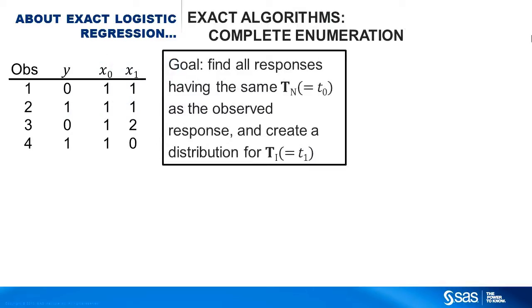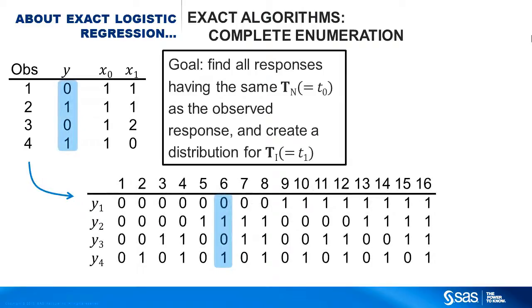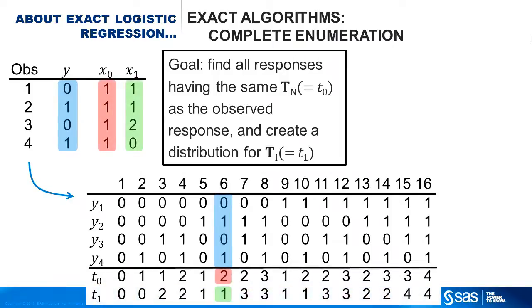Let's create an exact distribution for this data, which has an observed response vector y taking values 0, 1, 0, 1, and two covariates, the intercept x naught and x sub 1. List out all 16 possible y vectors you could have had. The sixth vector is the observed response. Compute the sufficient statistics, which is just the dot product of y with x. The observed sufficient statistics are 2 for x naught and 1 for x sub 1.